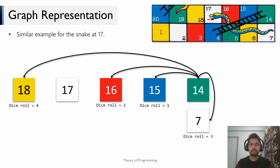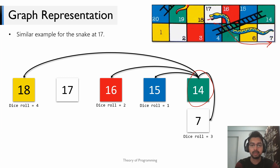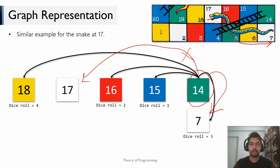The same adjustment needs to be made for a snake. Consider a snake which takes you from vertex 17 to vertex 7. If you're at block 14 and your dice roll outcome is 3, you would initially point to vertex 17, but since there's a snake at 17 taking you to 7, this edge actually points to vertex 7. So all possible moves leading to vertex 17 should be replaced with vertex 7.